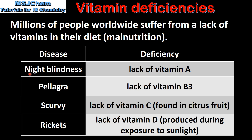First we have night blindness, which is caused by a lack of vitamin A. Next is pellagra, which is caused by a lack of vitamin B3. Scurvy is caused by a lack of vitamin C, which is found in citrus fruit. And finally, rickets is caused by a lack of vitamin D, which is produced by the human body during exposure to sunlight.